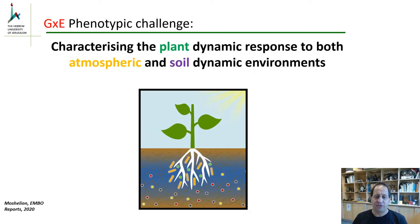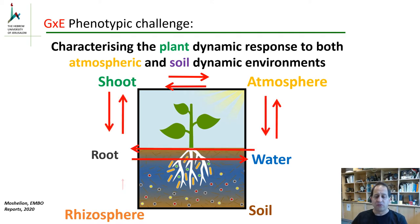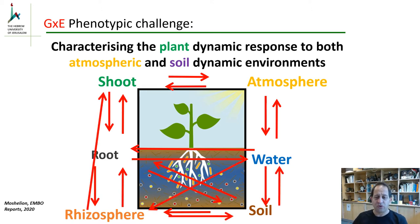The main challenge in phenotyping the plant-environment interactions is the dynamic and cross-interaction between the plant and the environment. When the shoot responds to the atmosphere, the root also responds to the shoot, and the water in the soil responds to the root and so on. So we must remember that monitoring the plant is not enough — we have to control and monitor the atmosphere, the soil, the water and so on.